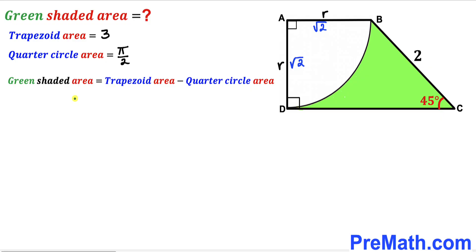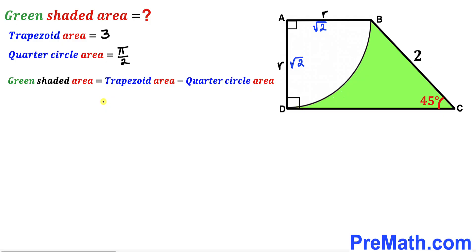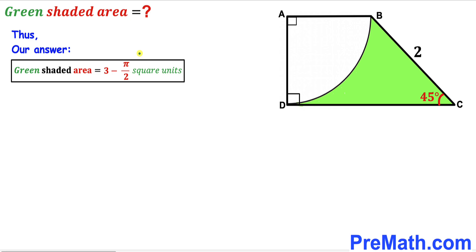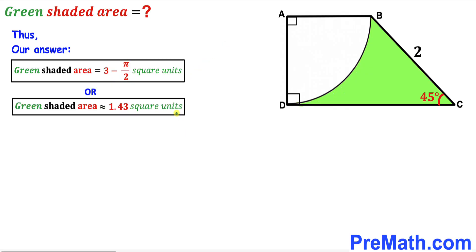Now for the final step: the green shaded region area equals the trapezoid area minus the quarter circle area. We found the trapezoid area is 3 and the quarter circle area is π/2. So the green shaded region area = 3 − π/2 square units, which is approximately 1.43 square units. That's our final answer. Thanks for watching and please subscribe for more exciting videos.